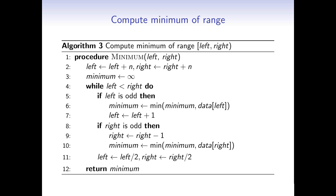We set the current minimum to infinity since we haven't checked any nodes yet, then enter a while loop that runs as long as left is less than right — meaning the range still has unprocessed values. In the loop, if left is odd we include it in the minimum and increment left. Then on the right side, if right is odd we decrement right first and then update the minimum — because data[right] is not actually part of the range (right is excluded). Finally we divide both left and right by 2 to move one layer up. When the range is empty we return the minimum.